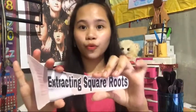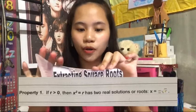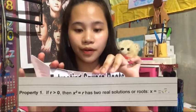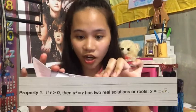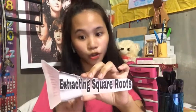First, we have Property 1. If r is greater than zero, then x squared equals r has two real solutions or roots. An example for this is x squared minus 25 equals 0. You need to rewrite this equation into the form of x squared equals r, so we have x squared equals 25. You need to add both sides by 25 to rewrite it into the form of x squared equals r.